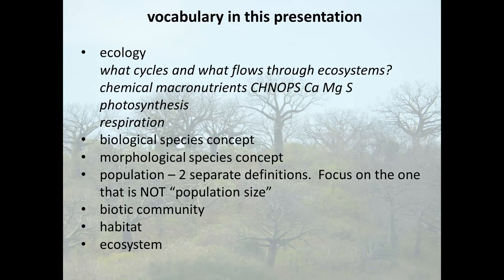I'm putting right up front all the vocabulary I want you to learn in today's presentation. I want you to know these words: ecology, biological species concept, morphological species concept, population — there are two different definitions — biotic community, habitat, and ecosystem. I'll post these in a separate Word file for you to use. I would open that up and add your own definition and descriptive information to help you learn what those words mean. I'm also including what cycles and what flows through ecosystems, chemical macronutrients, photosynthesis, and respiration — things we've been talking about already.